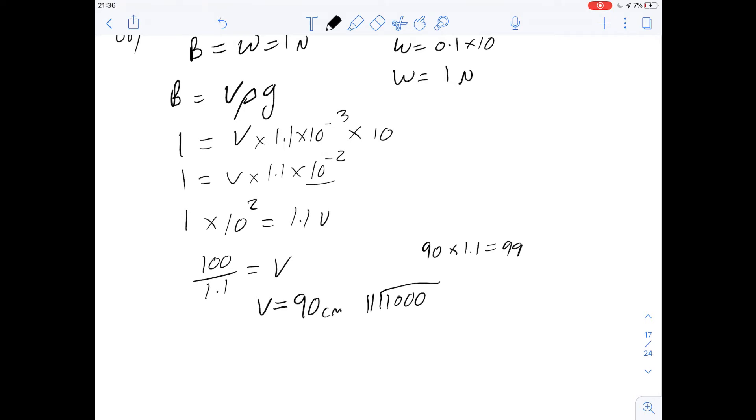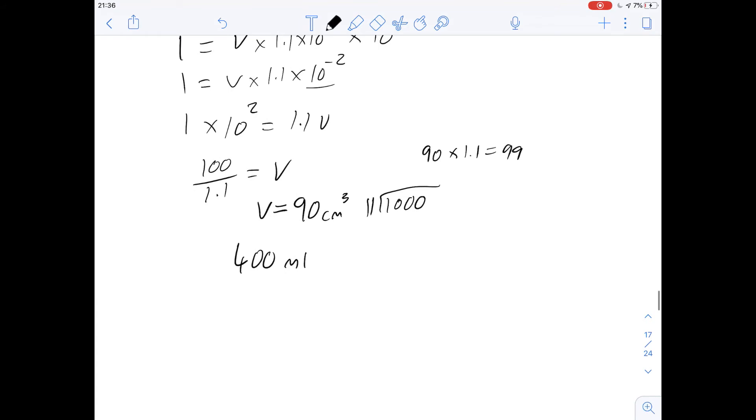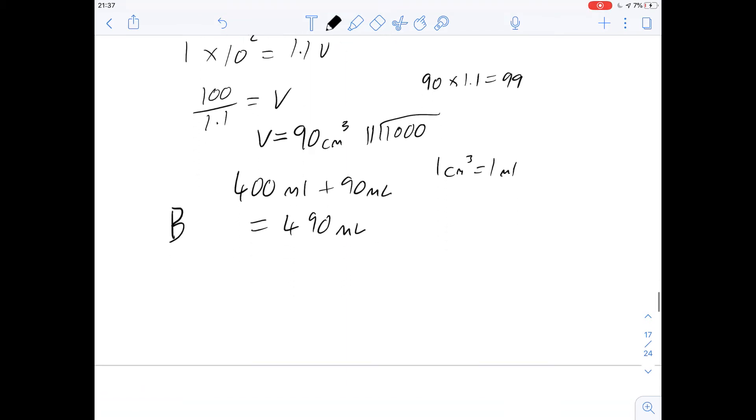So V is going to be 90 centimeters cubed. Now the original volume was 40 milliliters. And this would be centimeters cubed, or increase in volume. As we said, one centimeter cubed is going to be equal to one milliliter, meaning that the increase is going to be 90 milliliters. So the final volume is going to be roughly 419 milliliters. And if we compare that to the answers we've been given, that gives us an answer of B.